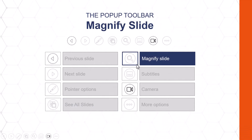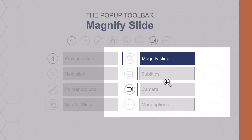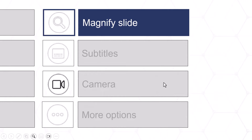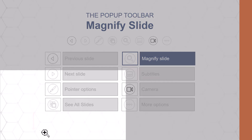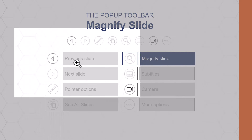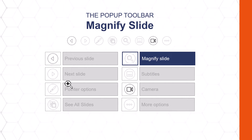Next we have the magnify slide option, which is just the magnifying glass. If I come to the pop-up toolbar and select it, I get a little rectangle highlighting what I'll magnify. So if I want to magnify these icons, I simply click on them and can talk about them during my presentation. To unmagnify or zoom back out, just hit the escape key. If I want to jump to a different part of my slide, I click the magnifying glass again, find the section I want, click to zoom in, and hit escape when done. That's magnifying your slide.